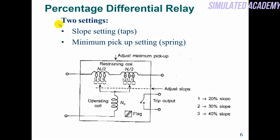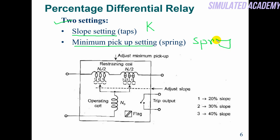For settings, there are two settings needed. The first is the slope setting, which I call k. The second is the minimum pickup setting — the spring value, i.e., the spill current pickup value. For the restraining coil setting: if I want to set it at tap 2, both sides will be at 2; if at tap 3, both at 3 — this is set on the center tap to determine whether to generate a trip signal or not. Tap 1 denotes 20% slope, tap 2 means 30%, and tap 3 means 40%.